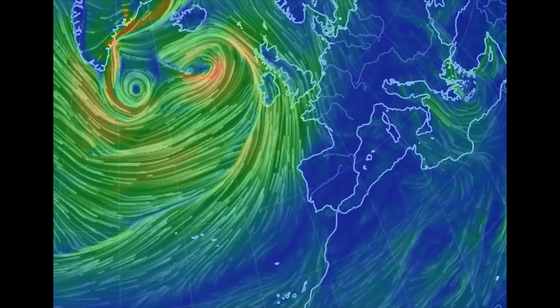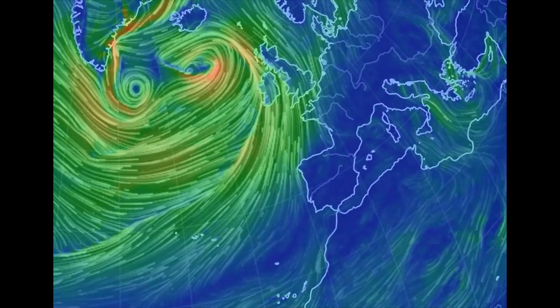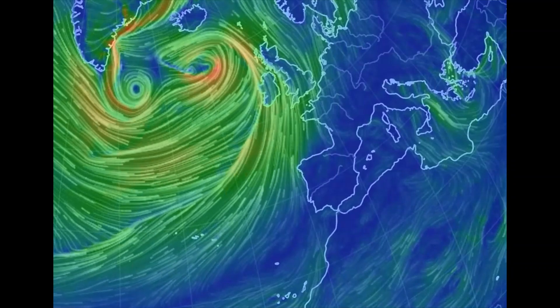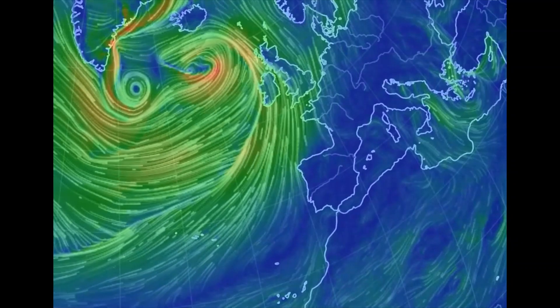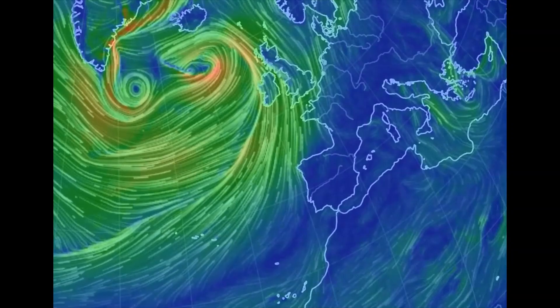So as it tracks over from the west over the top of us, what weather does it bring? This presentation is going to show you what happens as the depression passes overhead. We're going to imagine that we're standing here as the depression goes over us. We don't need to move anywhere. We stand here and all parts of that depression will move over the top of us. So here we go.